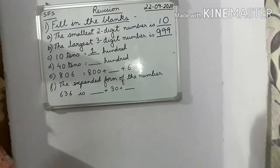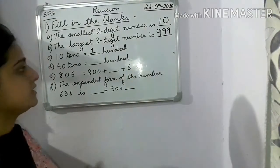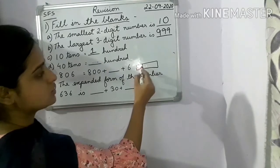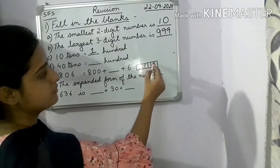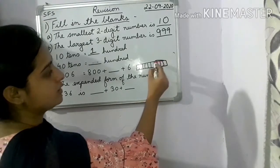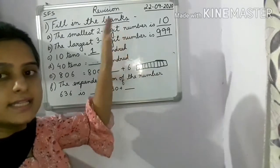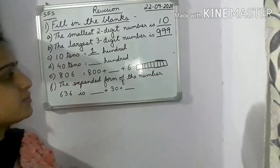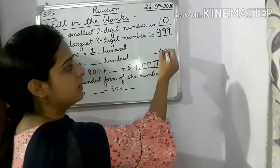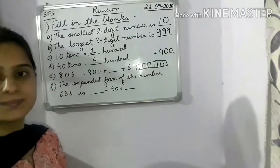Next: 40 tens is equal to how many hundreds? If there are 40 tens — we know 10 tens make 100, so 40 tens will make how many hundreds? If you count 10, 10, 10, 10 — that is four groups of 10 tens — 40 tens will make 400. So the answer is 400.